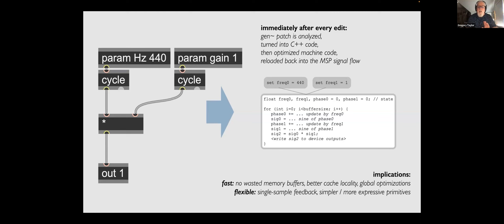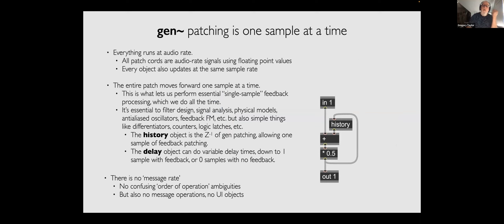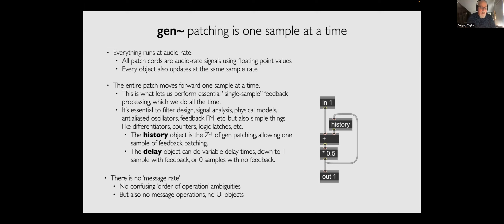You're not wasting any memory buffers, and there are global optimizations. But that also means there are some things to get used to about working in Gen. First, everything in Gen runs at audio rate, one sample at a time. All the patch cords are audio rate, the signals are nothing but floating-point values, and every single object updates at exactly the same rate. The whole patch moves one sample at a time, which lets us do all that single-sample processing, and there's no such thing as message rate.